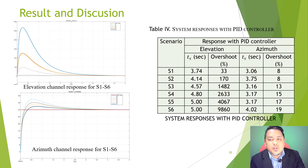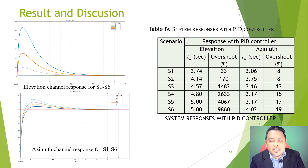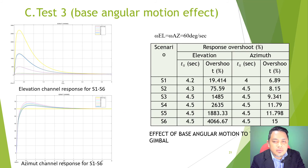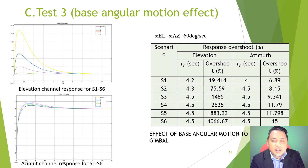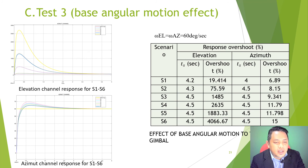Test three — base angular motion effect: results from Table 5 show that overshoot value increases in proportion to disturbance increase from S1 to S6. The percentage overshoot for elevation is higher than azimuth. The settling time for azimuth response is approximately the same as elevation. Here, omega_el and omega_az are changed to 60 degrees per second. Here is the result and response of the azimuth and elevation channel.